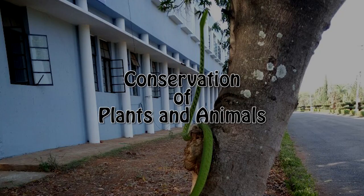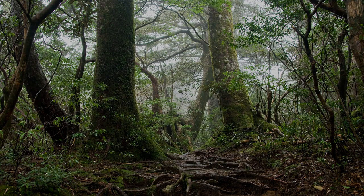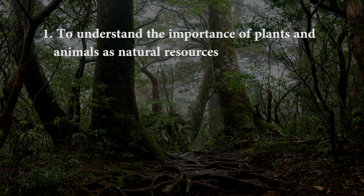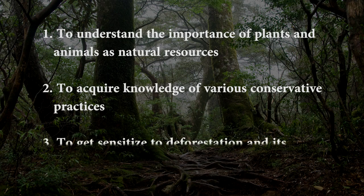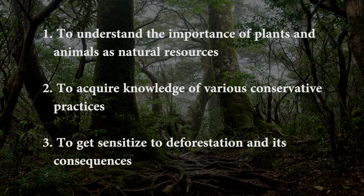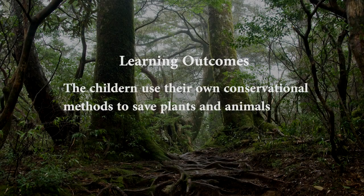Conservation of plants and animals. The first objective of the course is to understand the importance of plants and animals as natural resources. The second objective is to acquire knowledge of various conservation practices. The third objective is to get sensitized to deforestation and its consequences. The learning outcome is that children use their own conservation methods to save plants and animals.